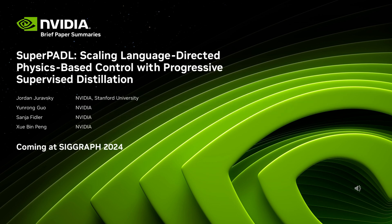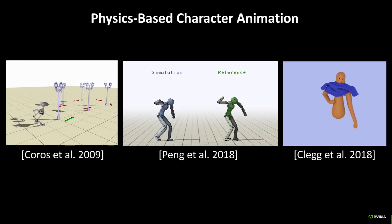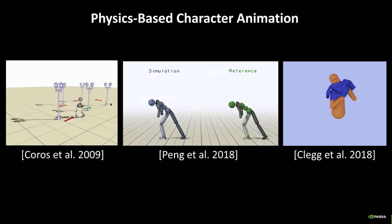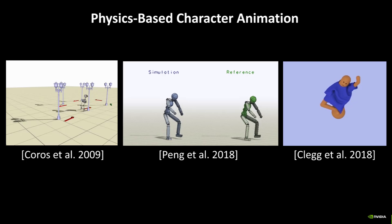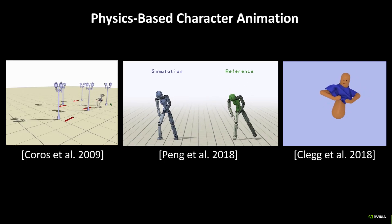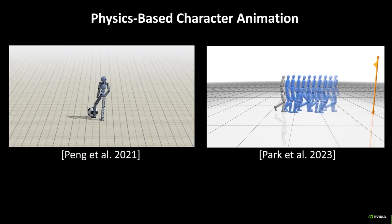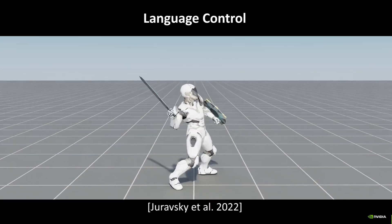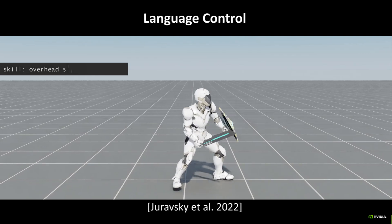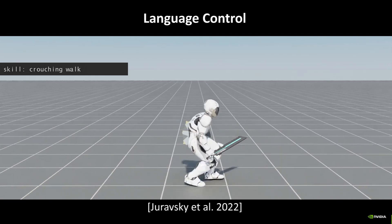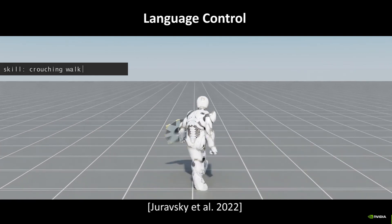In this work, we present SuperPattle, a framework for scaling up training of language-directed physics-based animation models to datasets containing thousands of motion clips. Physics-based animation techniques have been able to reproduce a wide range of motor skills for simulated characters, but it can be extremely difficult for users to direct the behaviors of these simulated characters. Natural language offers an expressive interface that can be accessible for both expert and non-expert users alike.